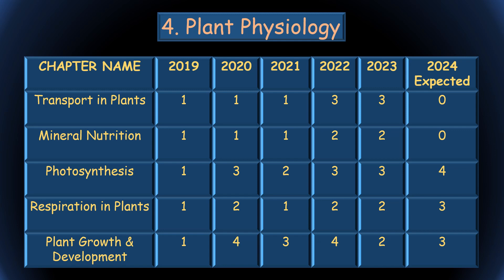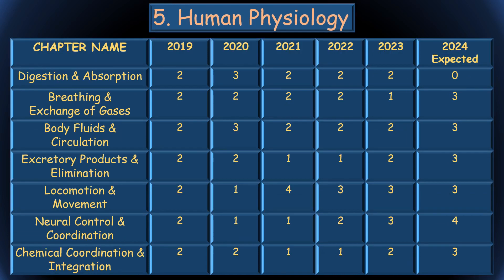From this unit, two chapters have been deleted: Transport in Plants and Mineral Nutrition, so no questions will be asked from these. Accordingly, Photosynthesis, Respiration in Plants, and Plant Growth and Development will have more weightage. We can expect a total of ten questions — that is 40 marks — from this plant physiology unit.